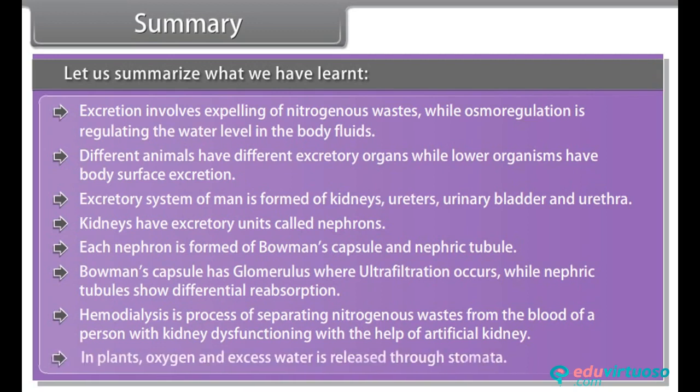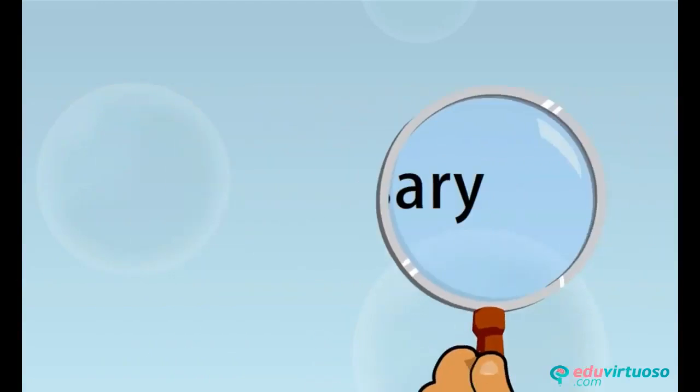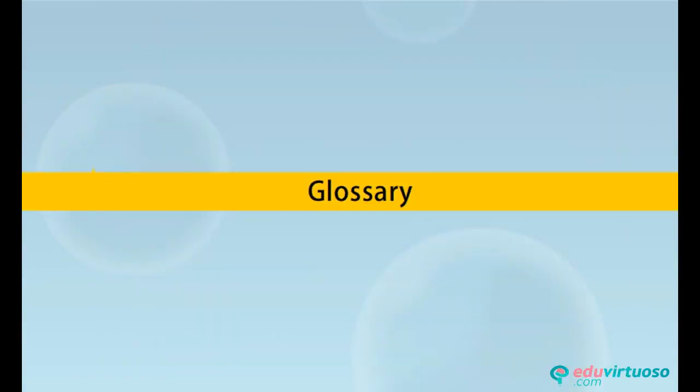In plants, oxygen and excess water is released through stomata as part of their excretion process.